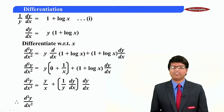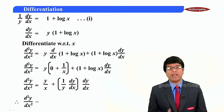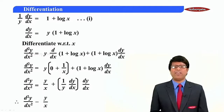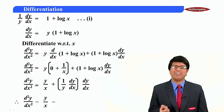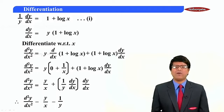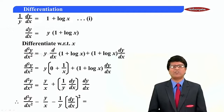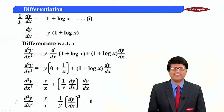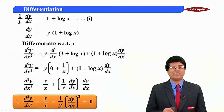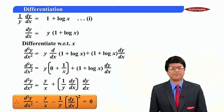Therefore d²y/dx² minus y/x minus (1/y)(dy/dx)² is equal to 0. Thus we are proved.